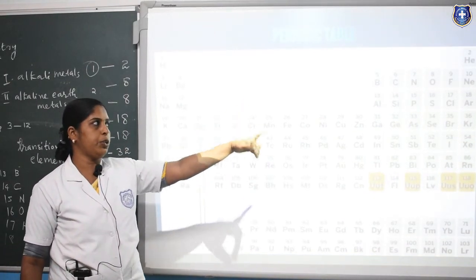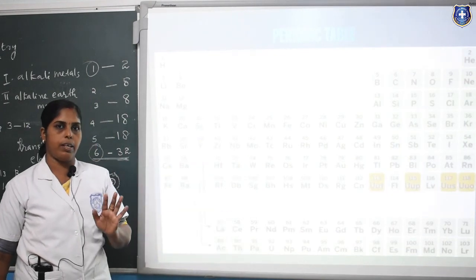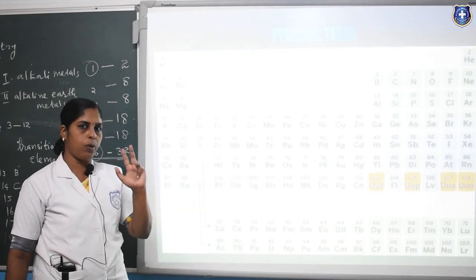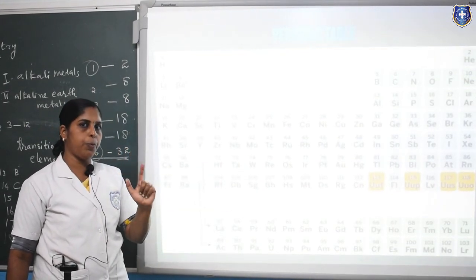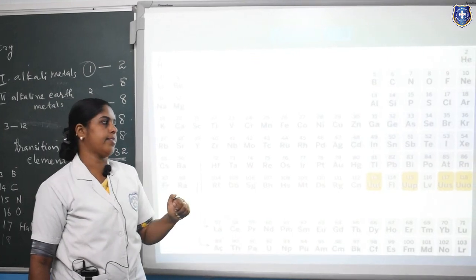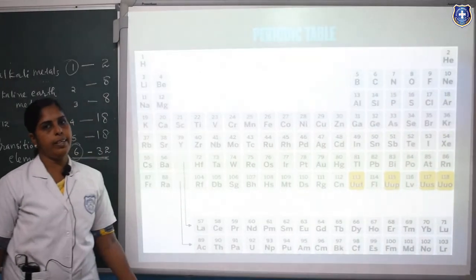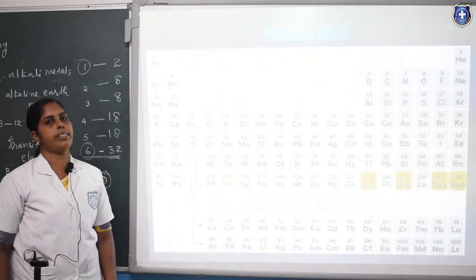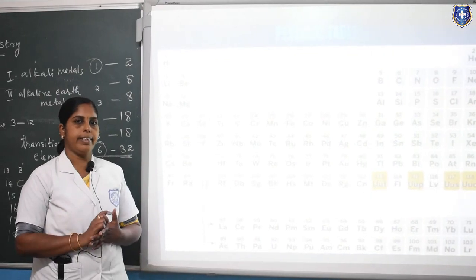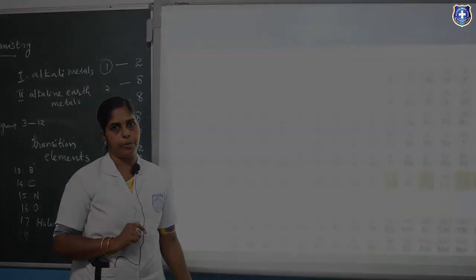The 17th group elements are otherwise known as halogens: fluorine, chlorine, bromine, iodine, and astatine. That concludes our chapter for today. See you in the next class. Thank you, students.